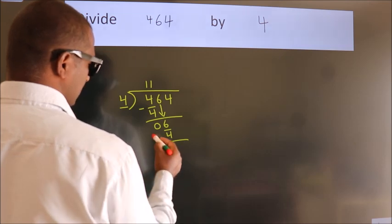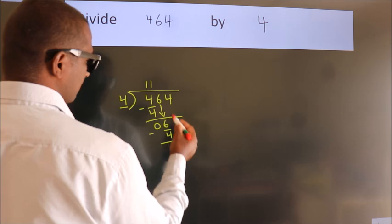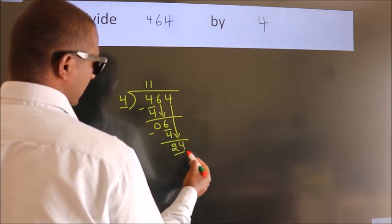Now we subtract. We get 2. After this, bring down the beside number. So 4 down. So 24.